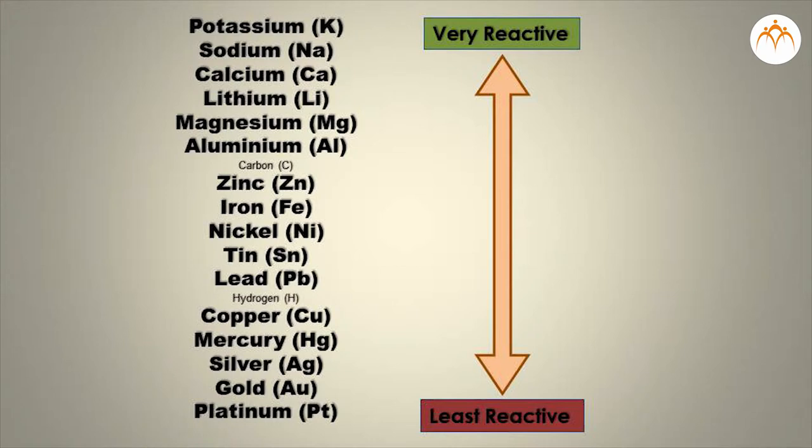Metals are divided into highly reactive metals, sodium and potassium, moderately reactive metals, magnesium and silver, and less reactive metals, for example gold.